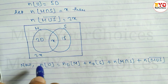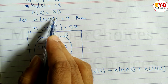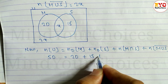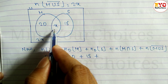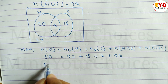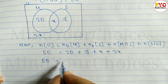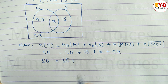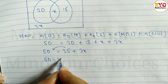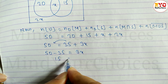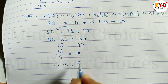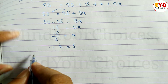n(U) equals the sum of all four parts: only M plus only S plus M∩S plus outside. So: 50 = 20 + 15 + x + 2x. This gives 50 = 35 + 3x. Therefore 50 minus 35 equals 3x, so 15 = 3x, and x = 15 ÷ 3 = 5.